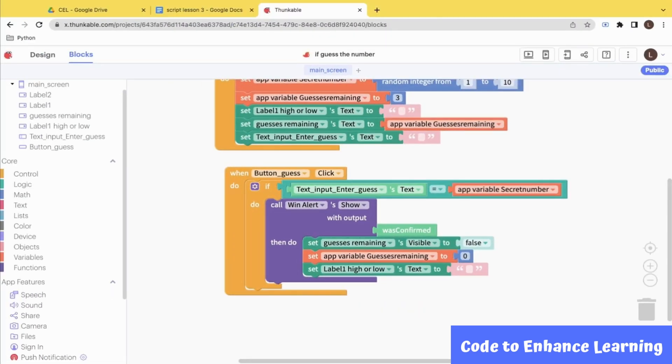What should we do if the guess value does not match the secret number and the if statement would evaluate to false? This brings us to Task 4.